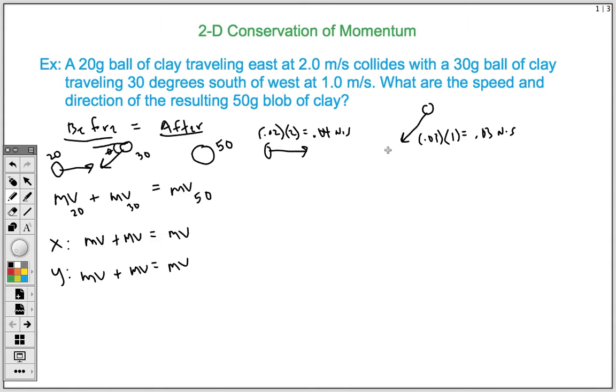But our other object, this 30-gram mass and velocity, it is angled. So what that means is we have to solve for its x and y components. We have to break that vector into its x and y components. We know that this angle right here is our 30 degrees. So we can just use basic trigonometry to solve for the x and y components.